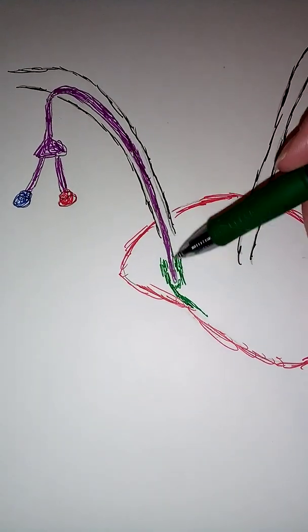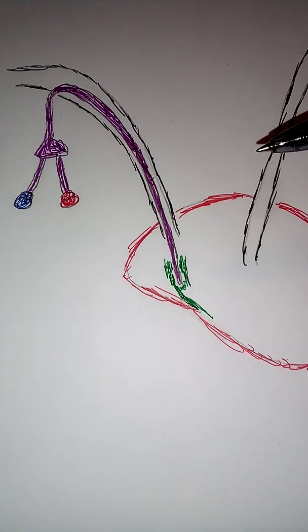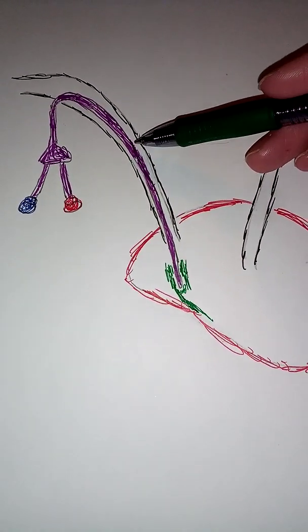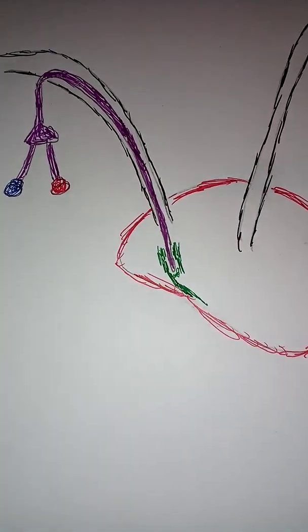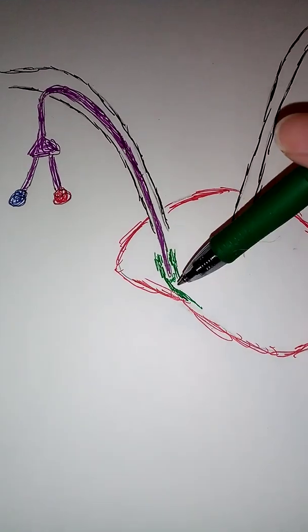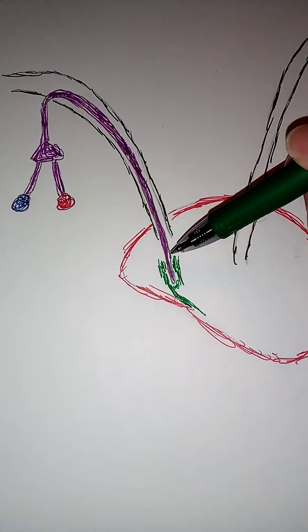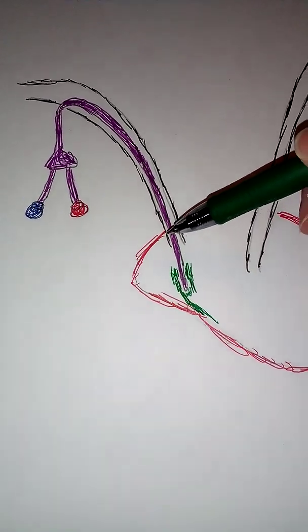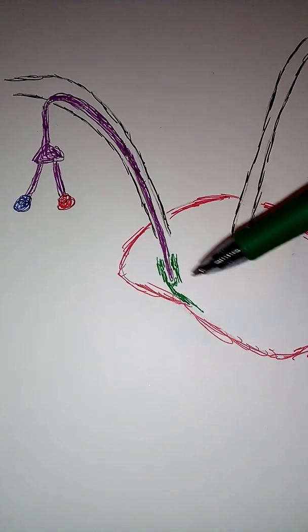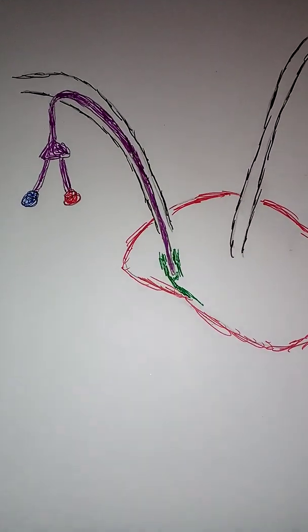The fibrin developing around the line can lead to something called CRIBSI - catheter-related bloodstream infection. So this is really important to get rid of.